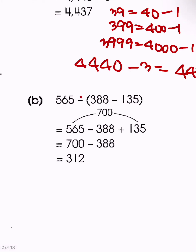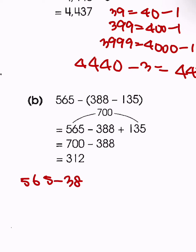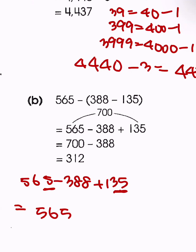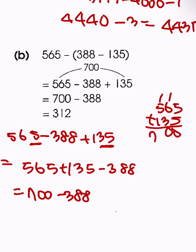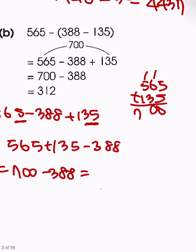For problem B, we have a negative distribution for parentheses involving a negative sign. That becomes 565 minus 388, then we have a double negative which becomes a positive. Numbers ending in 5 — we add those together. That gives us 700 minus 388, which is relatively easier and gives us 312.